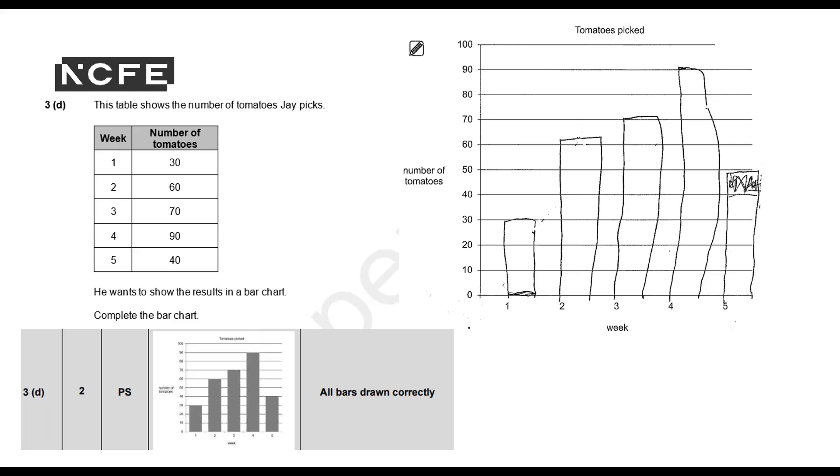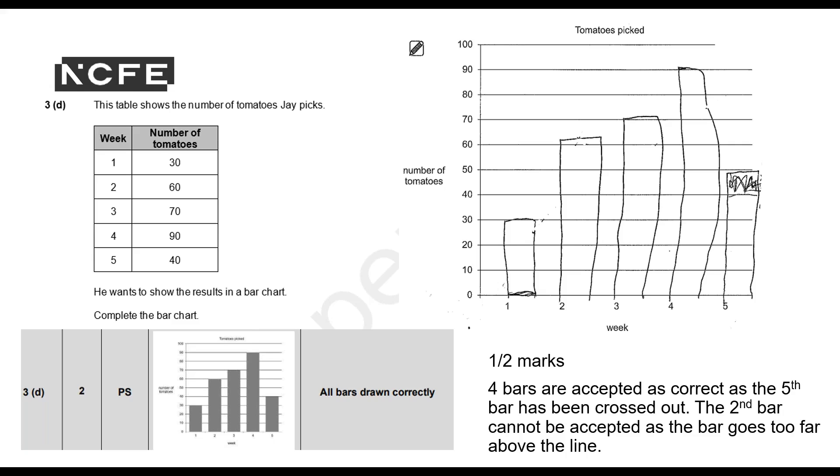And I'll show you that now. So they're going to get one out of two marks. Four of the bars are accepted as correct, as this fifth bar—the top has been crossed out. It's this second bar that we can't accept because the bar goes too far above the line. So for week two, it should be 60. And while we will accept this one here because it starts off at the 70, we can't really accept this because it's just too high on both sides.